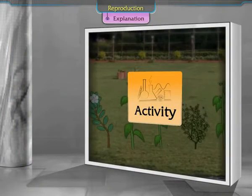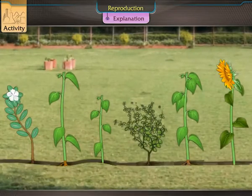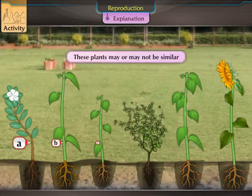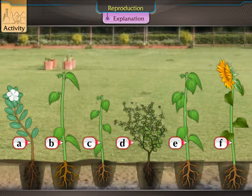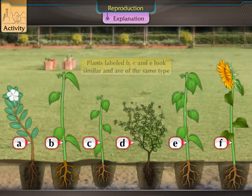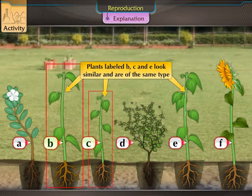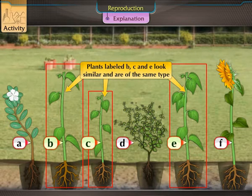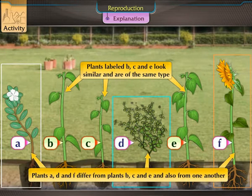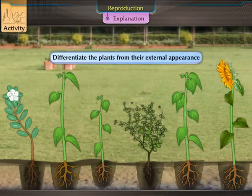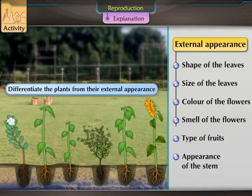We observe many plants growing together. These plants may or may not be similar. What we can conclude from the picture is that only the plants labelled B, C, and E look similar and are of the same type. However, plants A, D, and F differ from plants B, C, and E and also from one another. We can differentiate the plants from their external appearance.